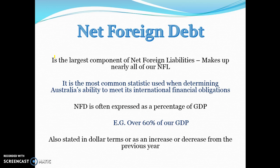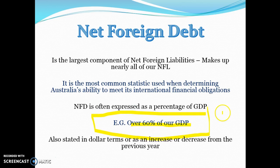Net foreign debt is the largest component of net foreign liabilities and at the moment it makes up all of our net foreign liabilities. It's the most common statistic used when determining our ability to meet international obligations. It's generally expressed as a percentage of GDP, and we'd like to keep net foreign debt below 60 percent and the current account deficit below 5 percent.